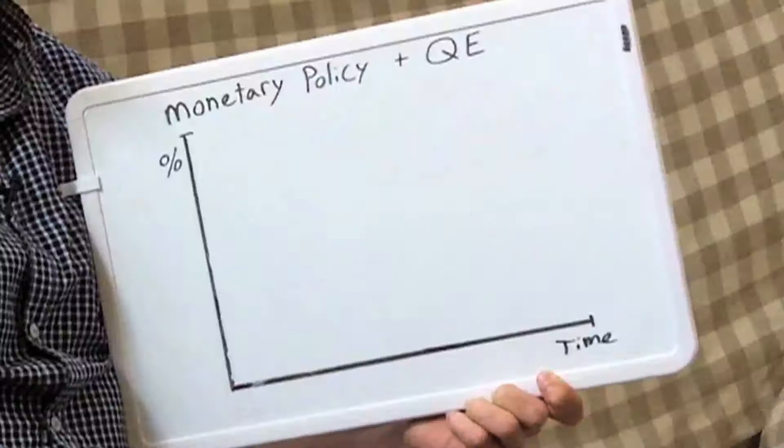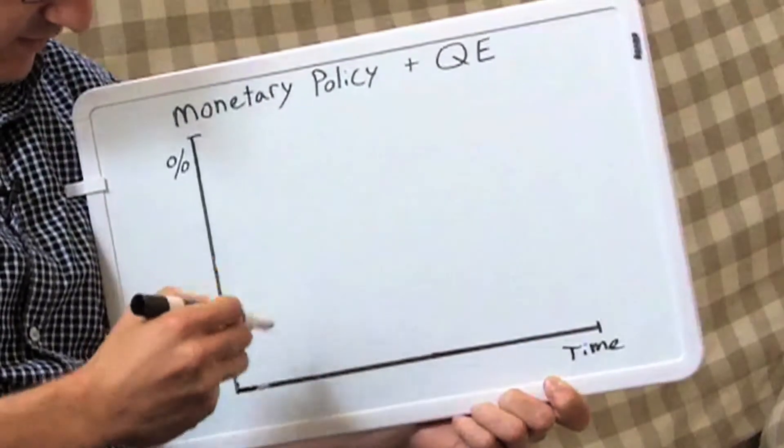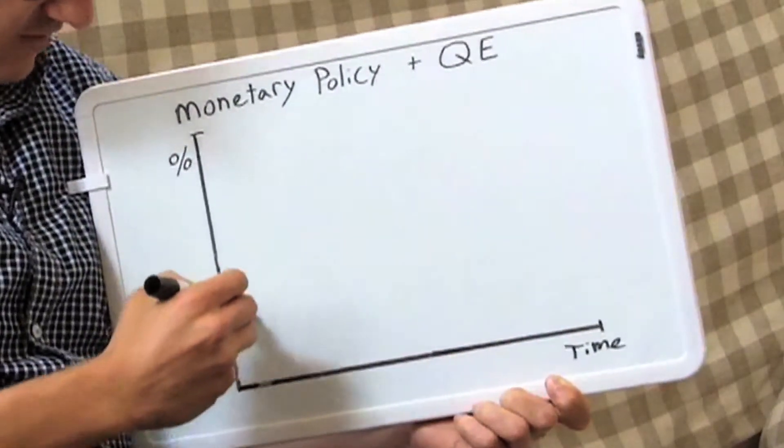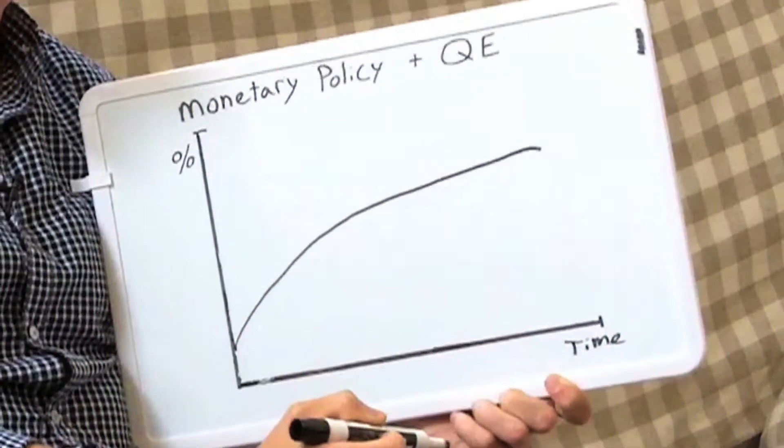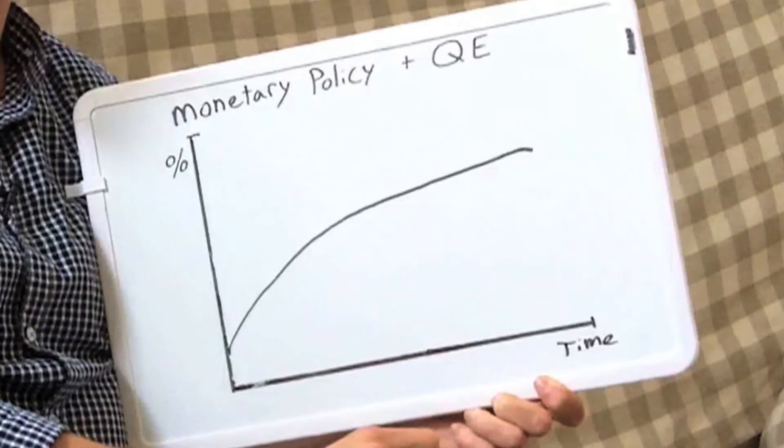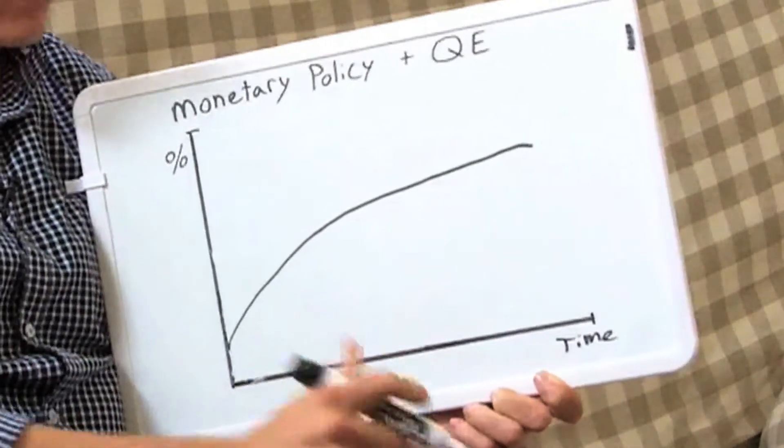We know that when the Fed buys bonds, the price of bonds tend to go up, which causes interest rates to go down. In normal times, the interest rate curve or the yield curve might look something like this, which is to say as you go out in time—1, 2, 3, 5, 10, 20 years—interest rates tend to go up.